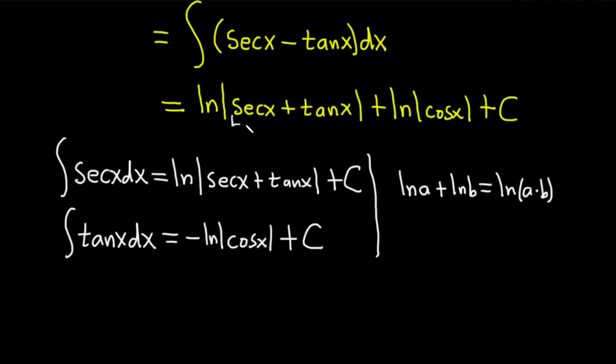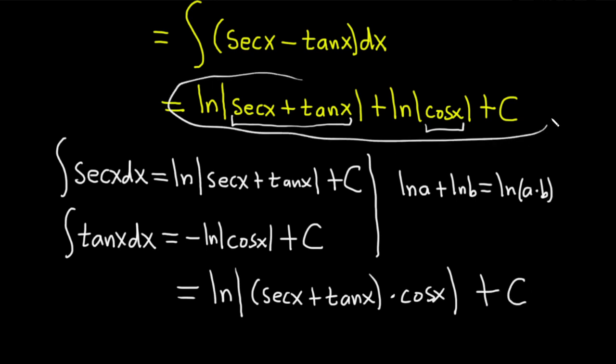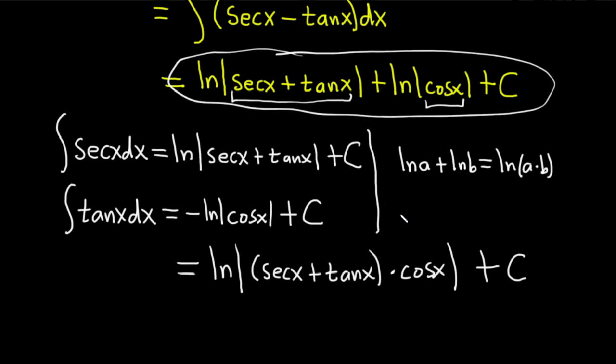So you can use that here, and you basically just multiply secant plus tangent times cosine. This is equal to the natural log of the absolute value of secant x plus tangent x times cosine x. And this is perhaps an optional step, but I think it's really cool, so I'm going to keep going and show you, because you could certainly stop here, but I think this is going to get a lot better.